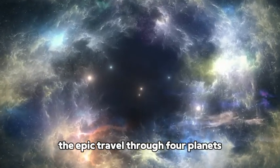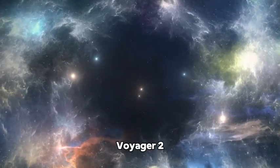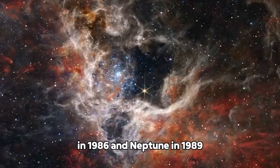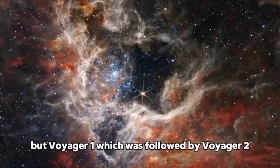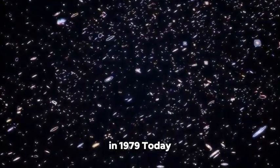The epic travel through four planets was one of the biggest achievements in space studies. Voyager 2 gave the first detailed observations of Uranus in 1986 and Neptune in 1989, but Voyager 1 became the farthest reaching Jupiter and Saturn in 1979.